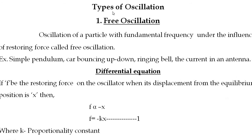There are three types of oscillation: free oscillation, damped oscillation, and forced oscillation. In this video we discuss the first type — free oscillation. Its definition: oscillation of a particle with fundamental frequency under the influence of a restoring force. Simply put, the body oscillates using only its restoring force. Examples include a simple pendulum, a car bouncing up and down, a ringing bell, and current in an antenna.